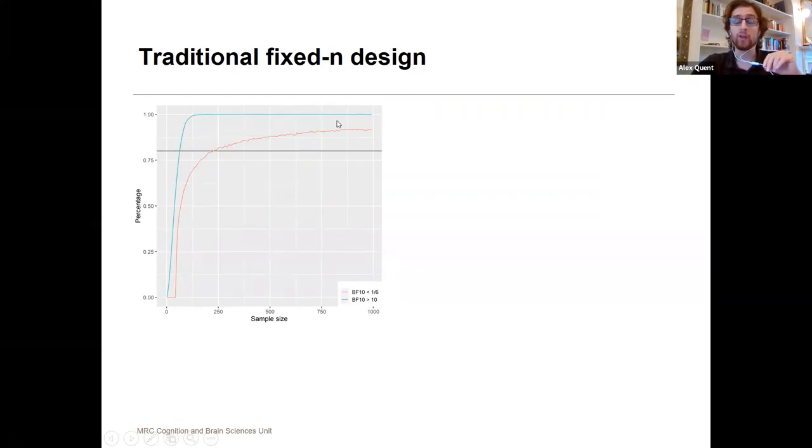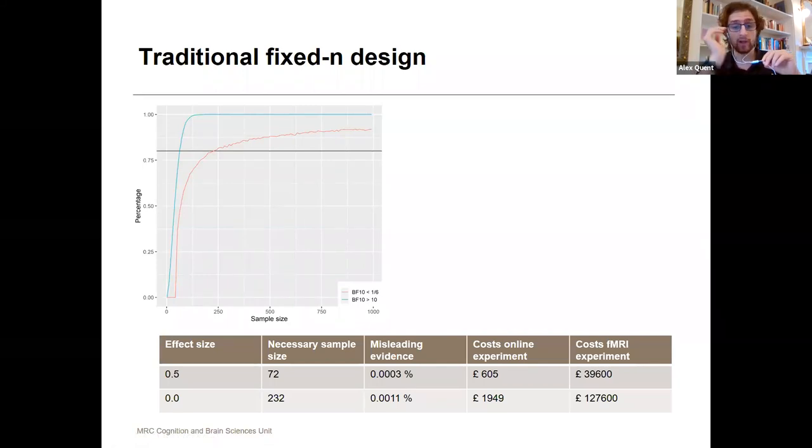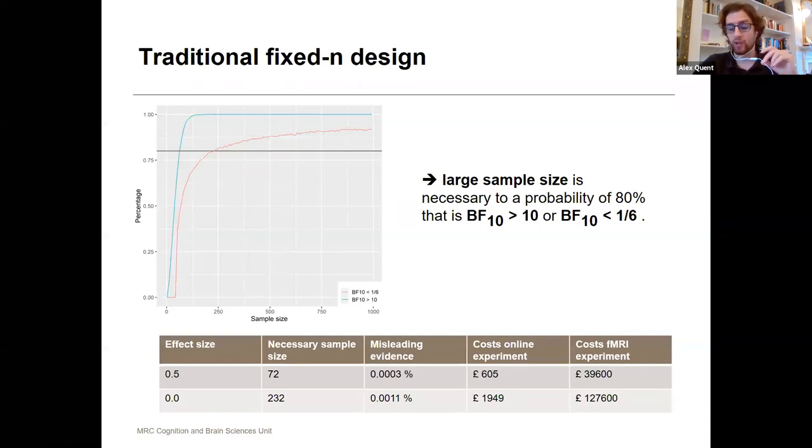the same thing for Bayes factor below 1/6 and a true effect size of zero. What's clearly apparent when you look at this graph: we need quite high sample sizes to get there. Specifically, if you want to provide evidence for null effects, you end up testing over 200 participants, which means if you do an MRI experiment, you will pay over a hundred thousand pounds just for one experiment. That's obviously a huge problem.